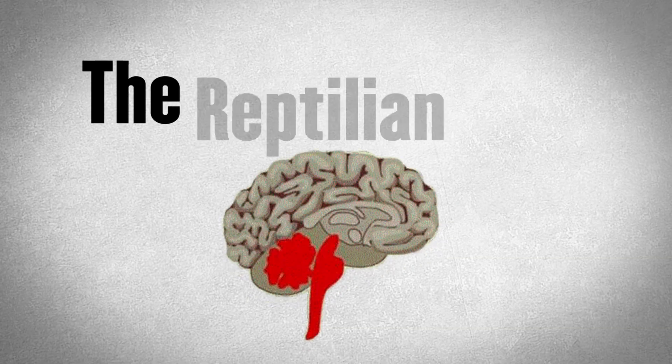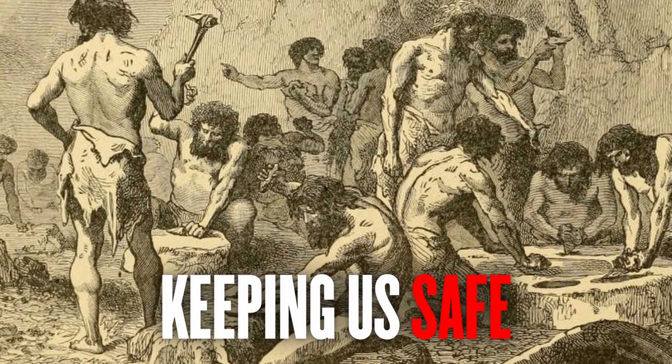First up, we have this thing called the reptilian brain. It's the oldest and most primal part of us. It's about survival, instincts, and most importantly, keeping us safe.